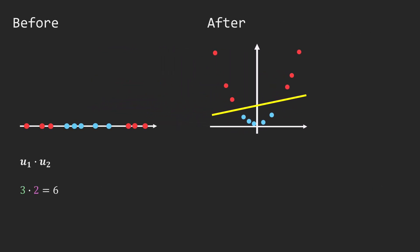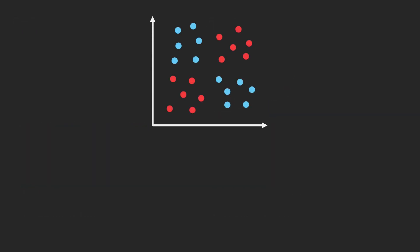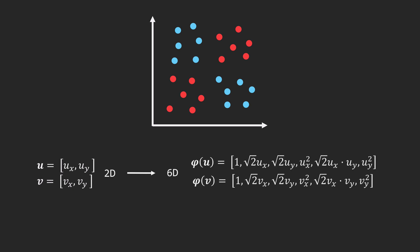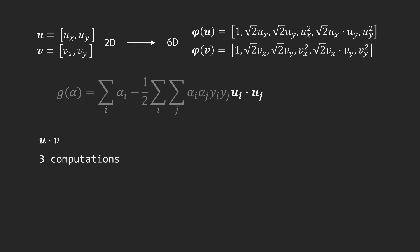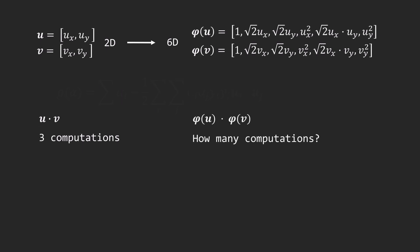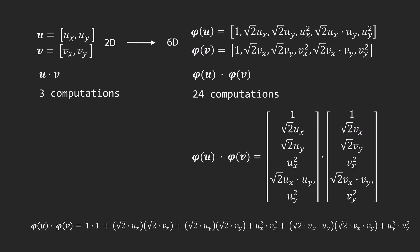With one feature, the dot product requires only one computation. With two features, it requires two multiplications and one addition, so three computations in total. Let's get back to our original non-linearly separable dataset and suppose we expand from two original features to six specially chosen features for the XOR problem. These features involve squaring and multiplying by the root of two. In two dimensions, for the dot product we have three computations. And what about the complexity in six dimensions? Step-by-step calculations reveal that we now need 24 computations – significantly more.